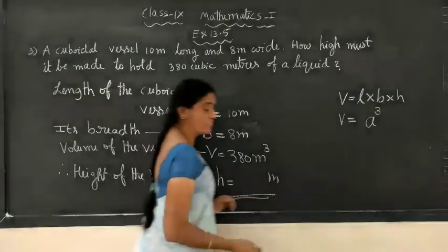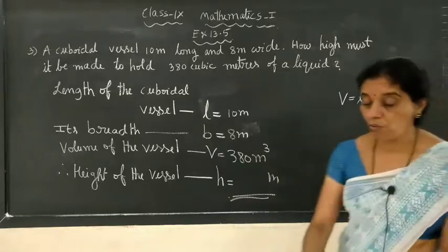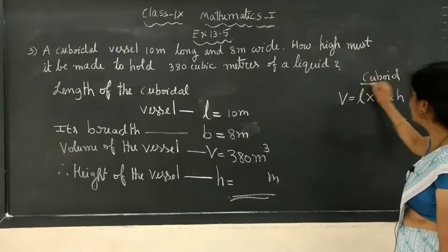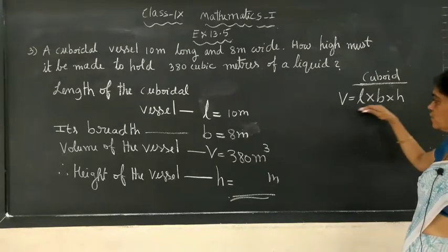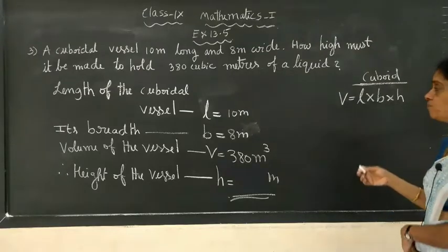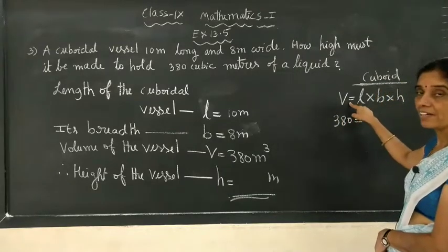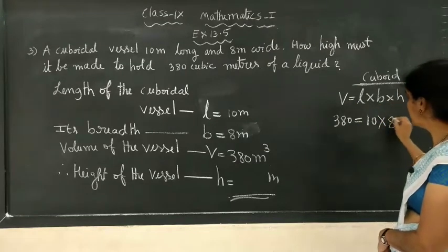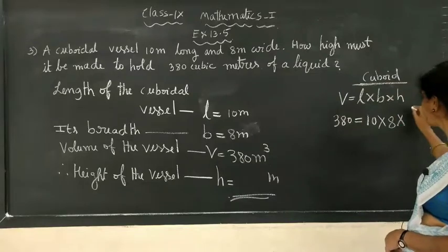Now, which formula do we have to use? It is for cuboid — this formula we have to use. Volume of the cuboid, so since the figure is cuboid, V is equal to L × B × h. Now, substitute the known values in the formula and simplify to get the unknown value. V value is known — it is 380 cubic meters — then L is known, it is 10 meters, into breadth, which is also known, it is 8 meters, into height h, which we do not know. So we write h only.